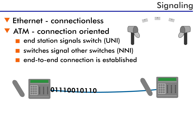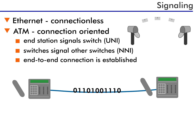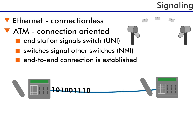This one connection can support communication in both directions. The connection from the user's computer uses UNI signaling. The first switch converts the message into NNI signaling for all switch-to-switch signaling, and the final switch responds using UNI signaling for the last segment to the destination computer.